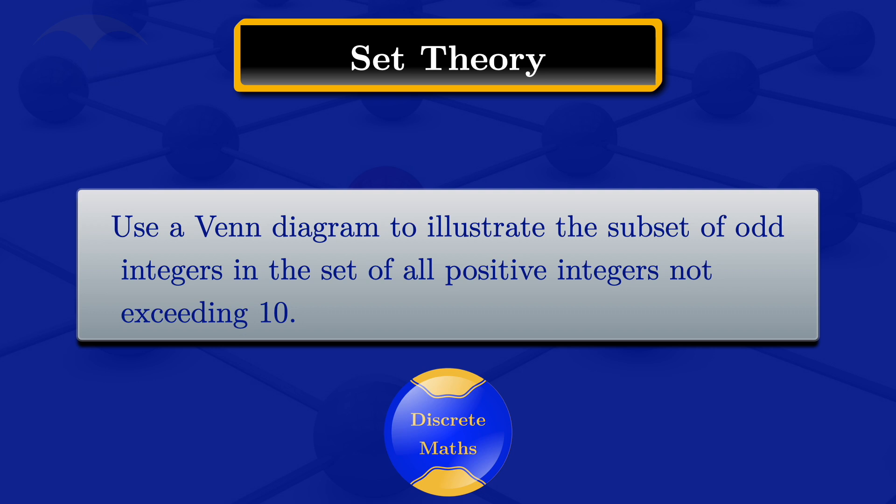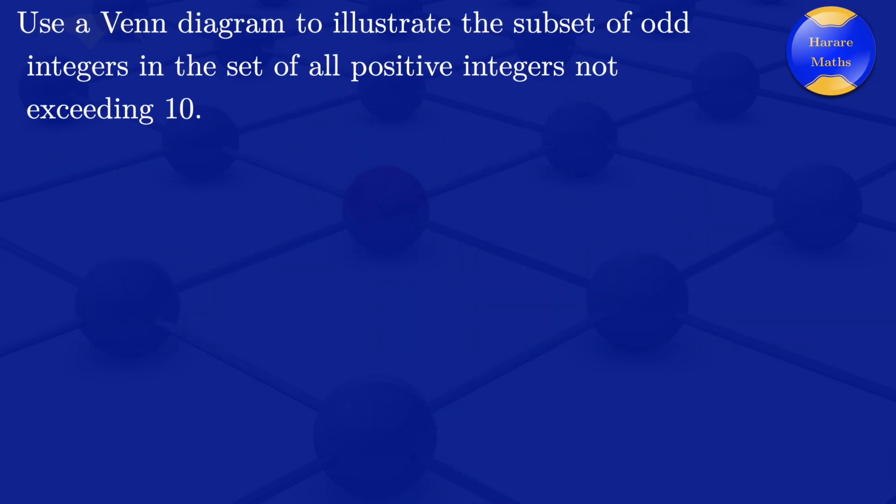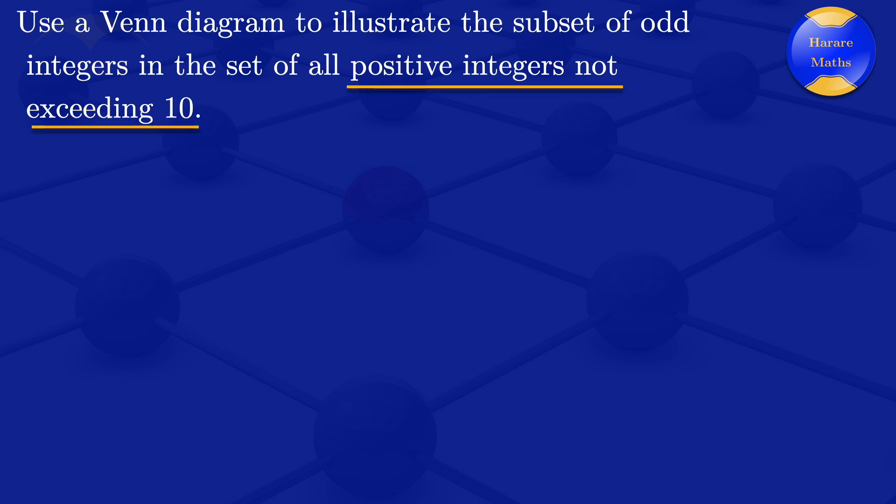In this video, I'm going to use a Venn diagram to illustrate the subset of odd integers in the set of all positive integers not exceeding 10. So I'll be looking at all positive integers not exceeding 10.